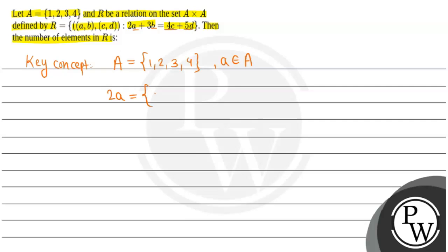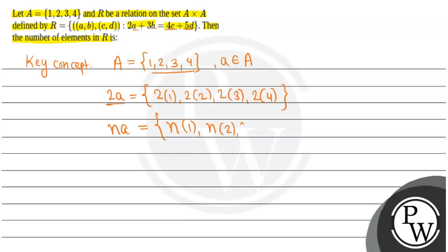So, 2A will be defined as 2×1, 2×2, 2×3, 2×4. This means we calculate the whole elements of A this way, and 2A will be defined. So if we define nA in general, we define it as n×1, n×2, n×3, and n×4 — this way we define it as a set.